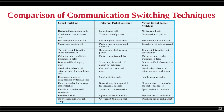In circuit switching, the circuit is established during the setup phase. In virtual circuit, we have a choice — either establish it like circuit switching or on demand when the station wants to send information. In circuit switching, data is transmitted as a continuous single unit, whereas in datagram and virtual circuit, data is divided into packets, resulting in a flow of individual packets.